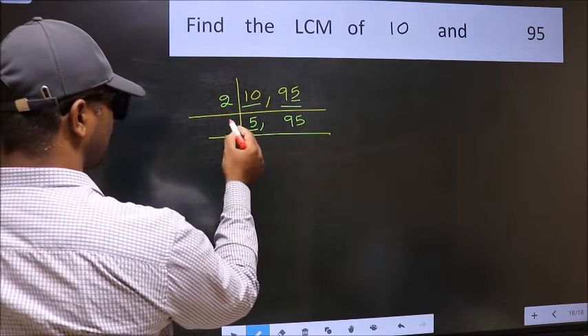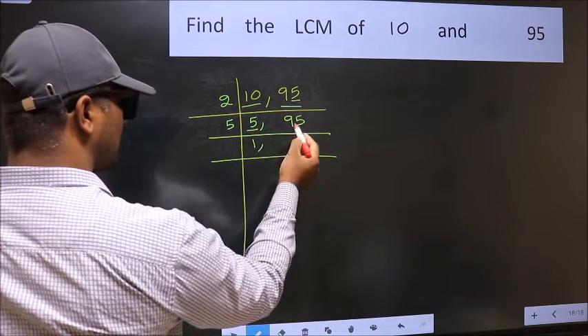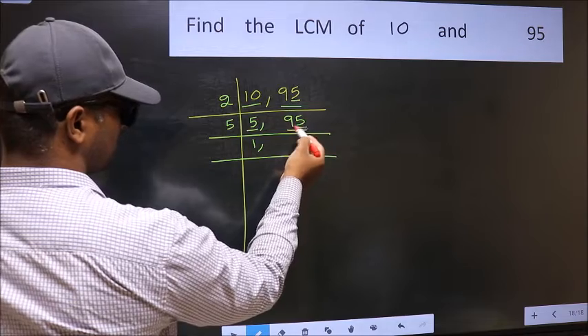Now here we have 5. 5 is a prime number. So 5 once 5. The other number 95. Last digit 5. So this number is divisible by 5.